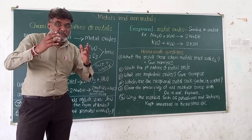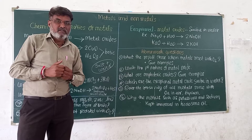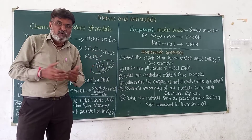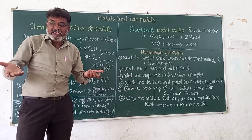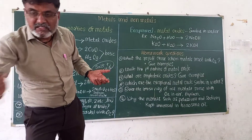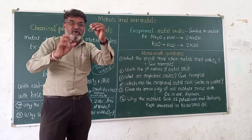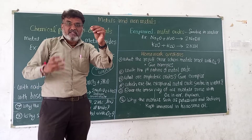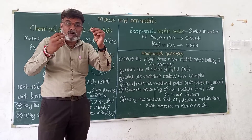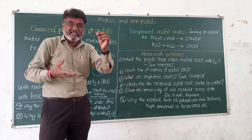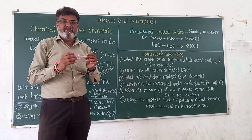When milk is converted into curd, or burning of wood, or burning of a magnesium ribbon — this is the magnesium ribbon. When we burn it, that dazzling flame forms magnesium oxide, an ash-like structure. This is chemical change.